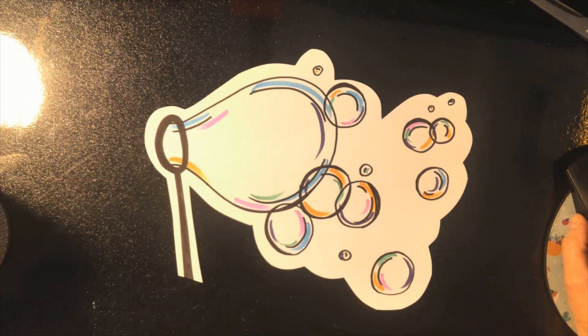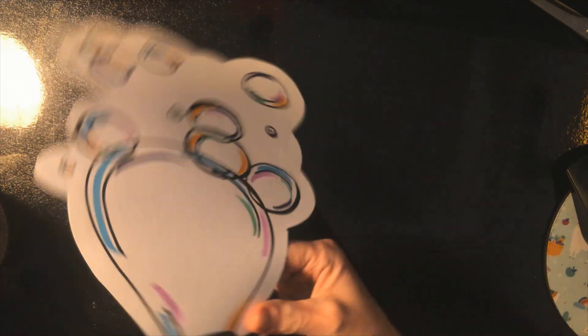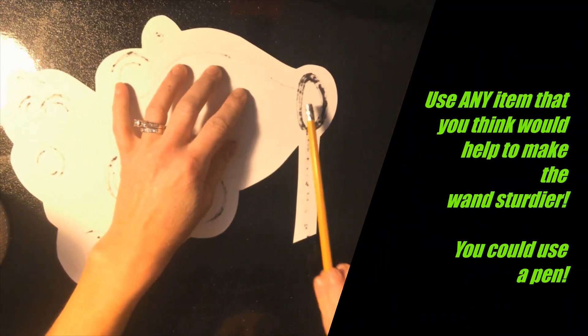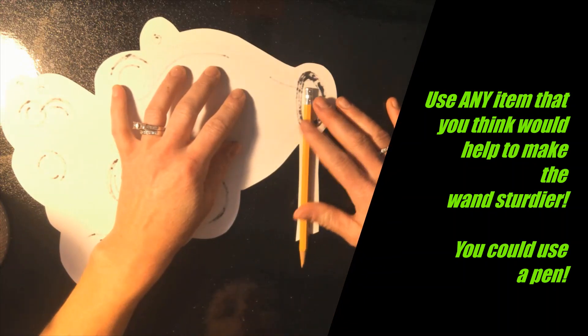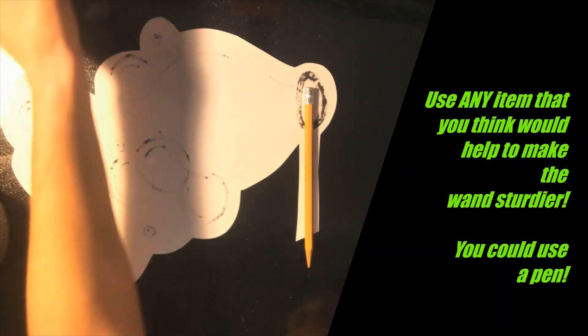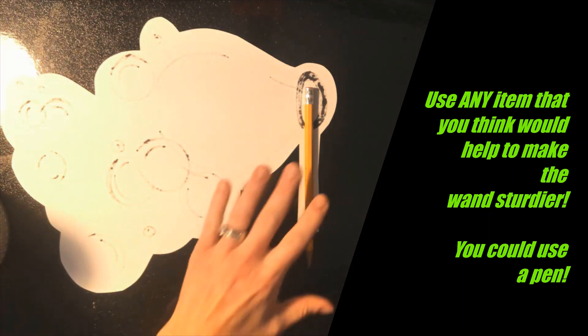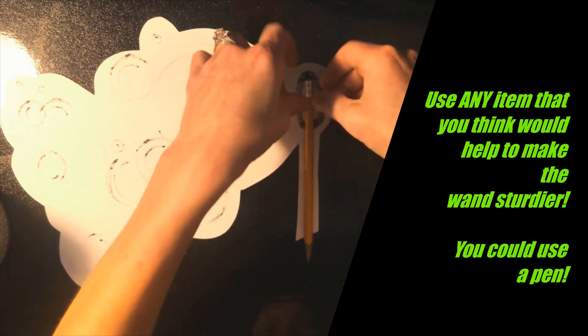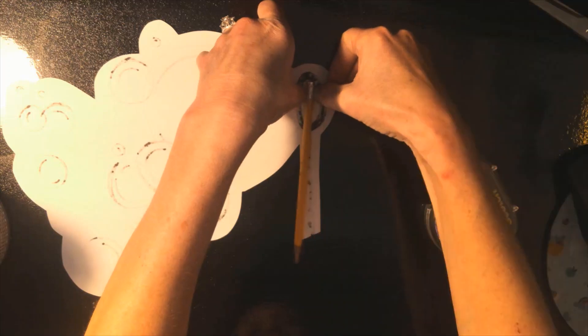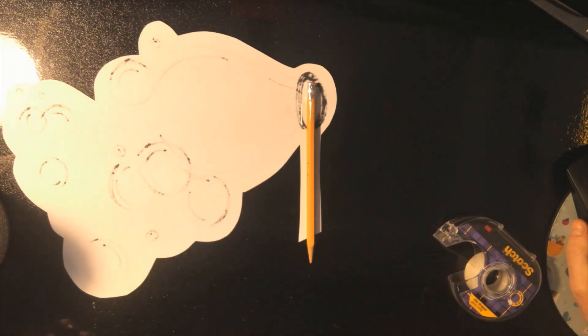If you find that your bubble wand might be a little bit too flimsy, like you don't feel like you can hold it up at your mouth, if you have a pencil or a chopstick or a skewer or something like that, you can take the pencil and some tape, and you're going to just tape it right here on the back. Now you have a bubble wand.